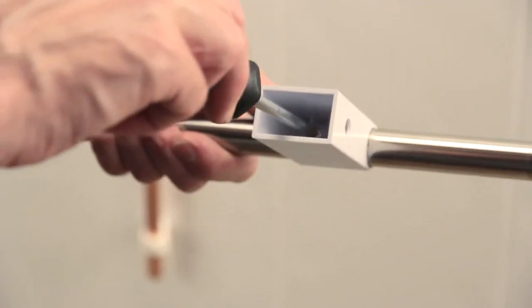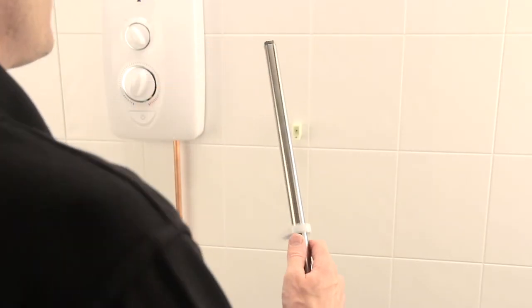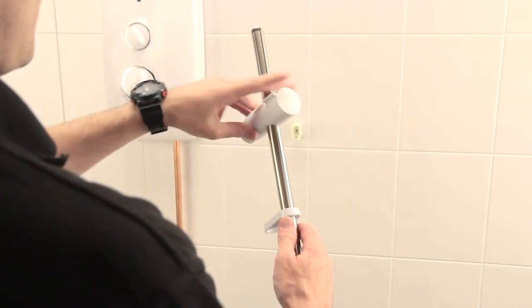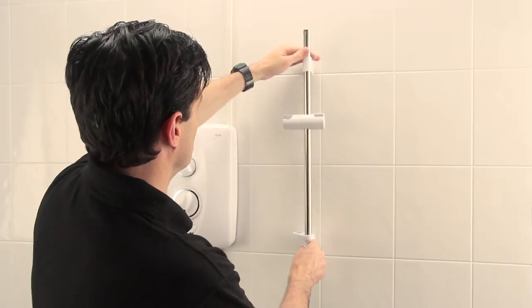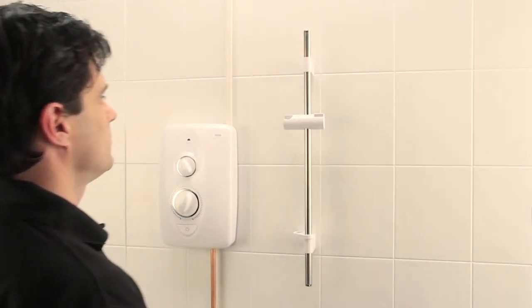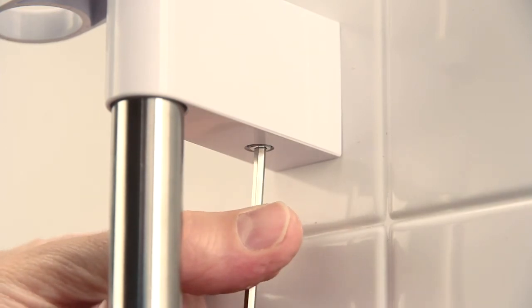Screw the bottom bracket cover to the sidebar. Slide on the hose retainer, handset holder and top bracket cover. Push the bracket covers over the fixing brackets and tighten the hex screws under the bracket covers to secure the fittings to the wall.